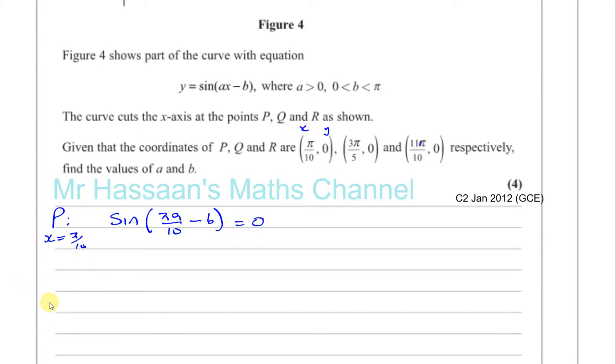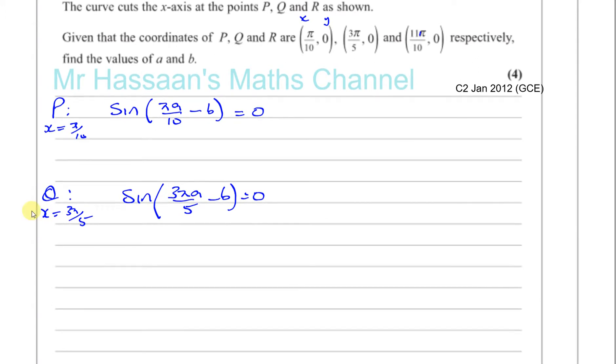And for Q, we can say x is equal to 3 pi over 5. So we can say the sine of A times 3 pi over 5, so that's 3 pi A over 5 minus B is equal to 0.